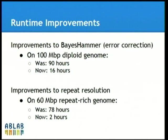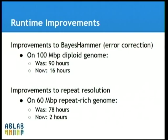Talking about performance — since we moved from bacterial datasets to larger genomes like fungal assembly, we constantly work on performance. For example, we improved BayesHammer. Previously it was running about 90 hours on a 100-megabase diploid genome; now it's only 16 hours, so the improvement is pretty obvious. We also improved other parts of the assembler. The repeat resolution module previously was working quite a long time, especially with mate-pair libraries, but we made quite an improvement on that as well.